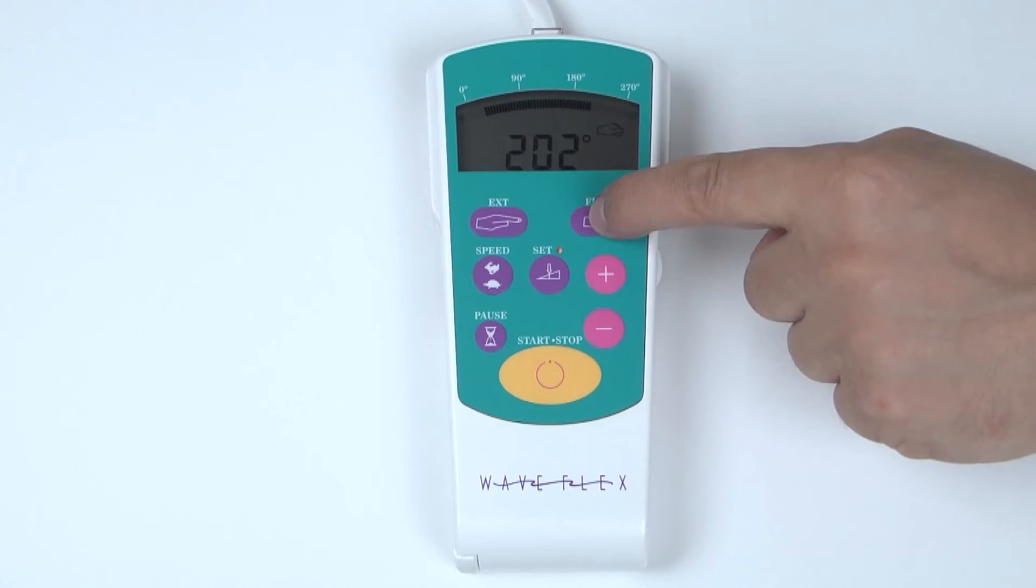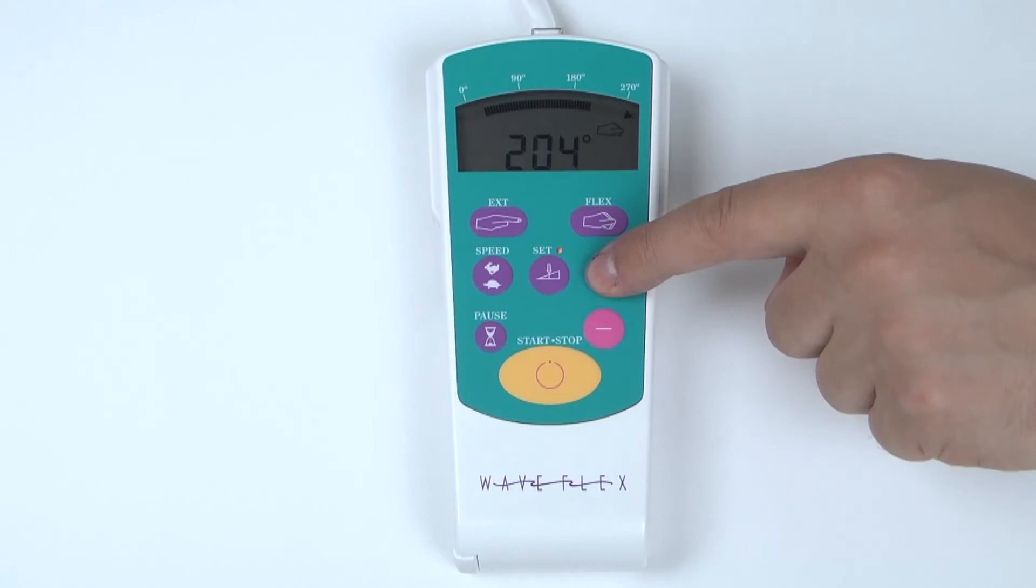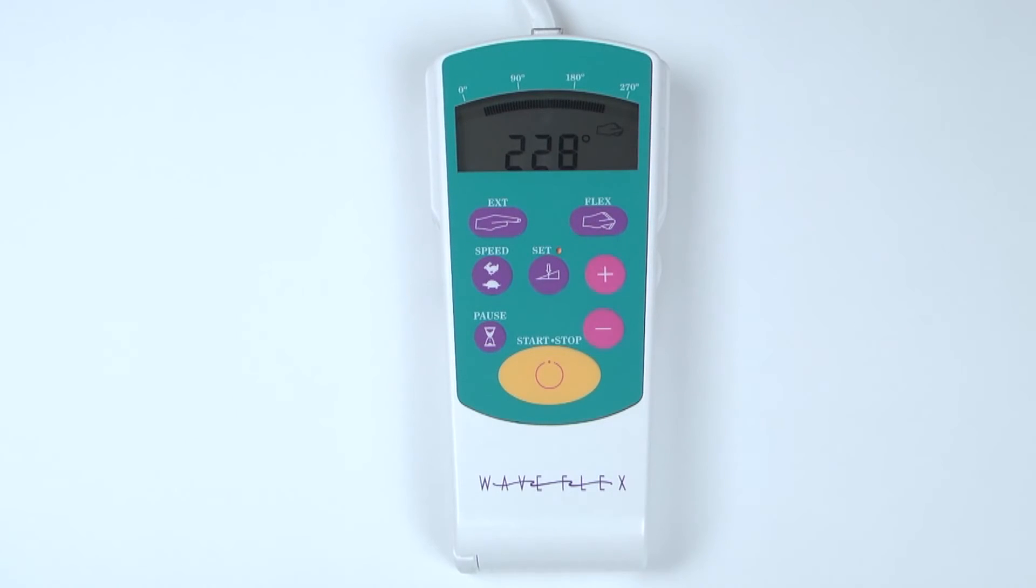To program flexion, press the Flexion button. The flexion icon will appear in the display window. Simply program in the desired amount of flexion by pressing the plus or minus button to increase or decrease the range.